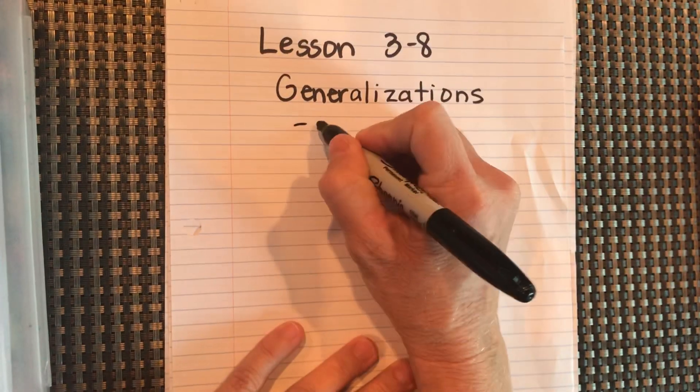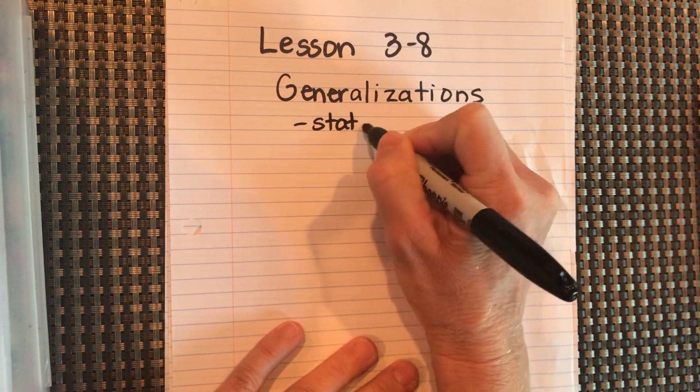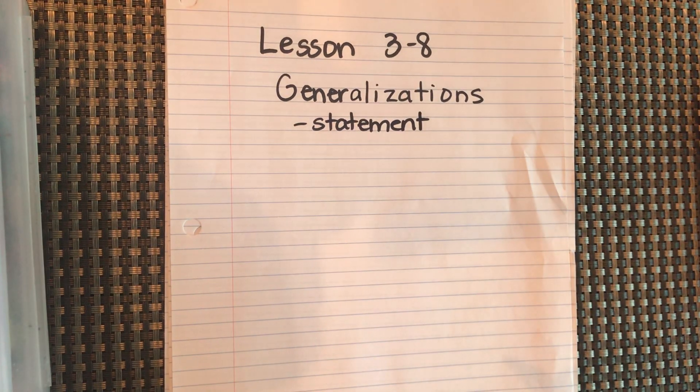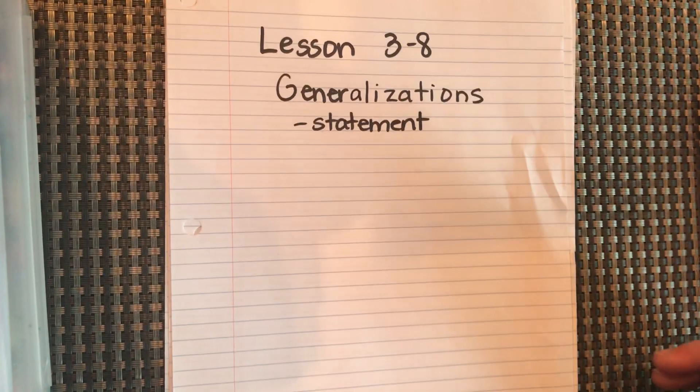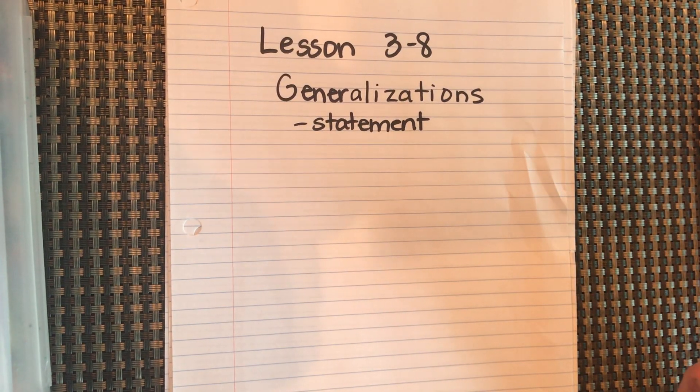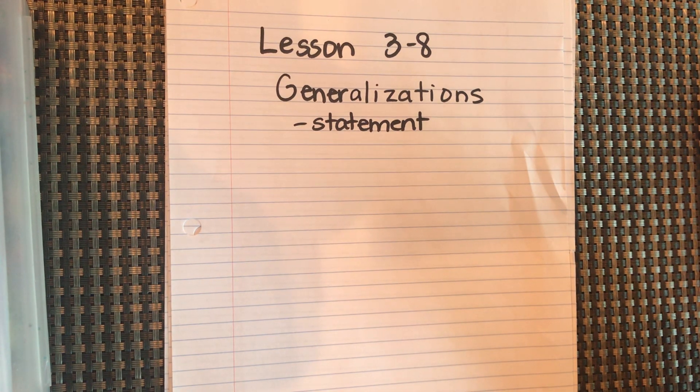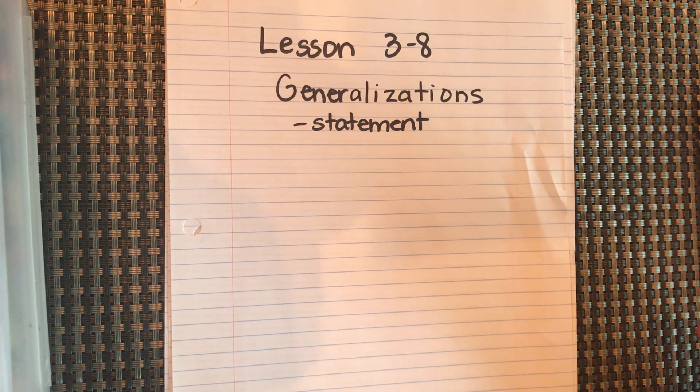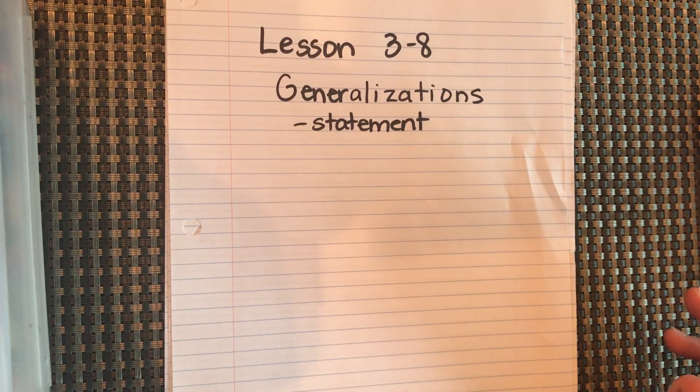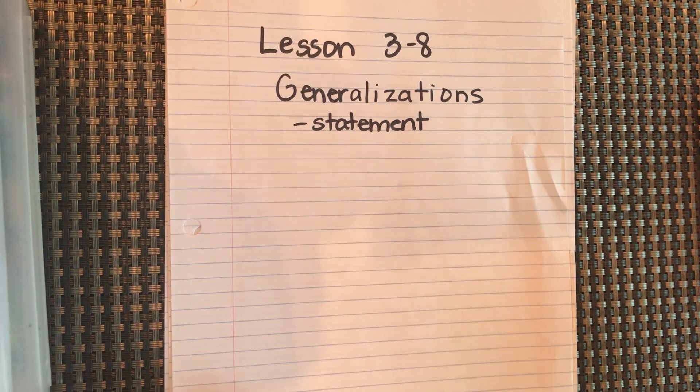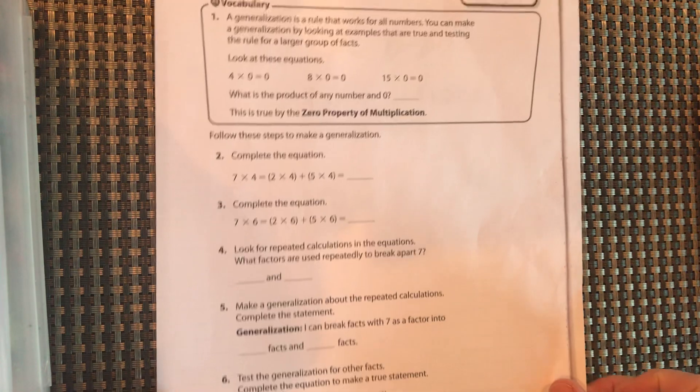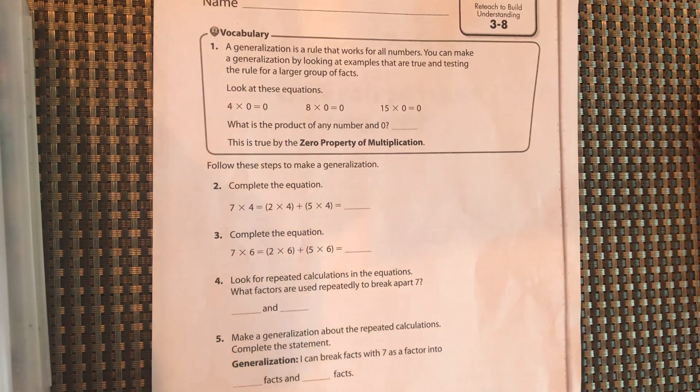A generalization is basically a statement that you are saying is true for that group of numbers that you're talking about. So if you're making a statement, like stating a fact about how to break apart numbers, you are making a generalization. And then they want you basically to prove it. Try that generalization and show that it works. So if we are looking at this worksheet here, the reteach 3-8.